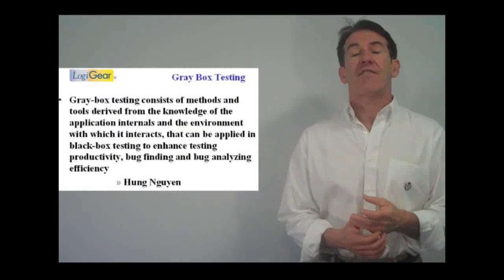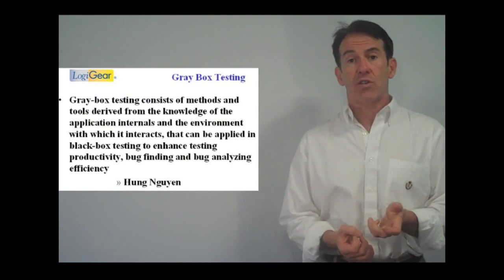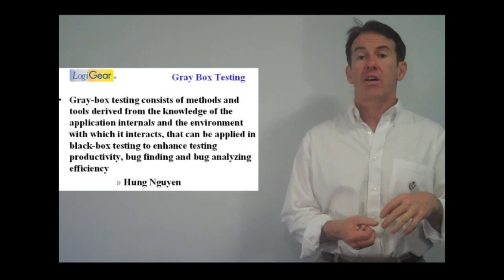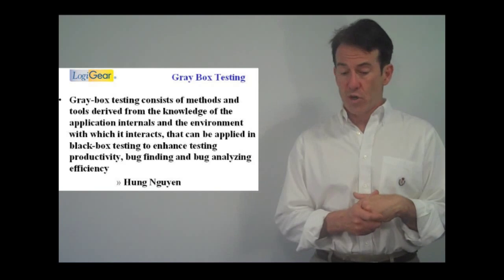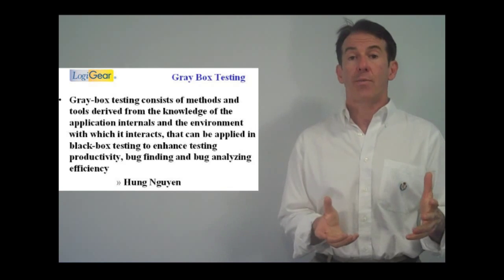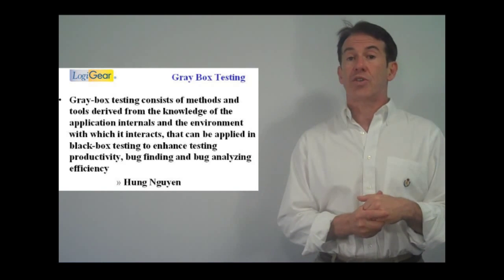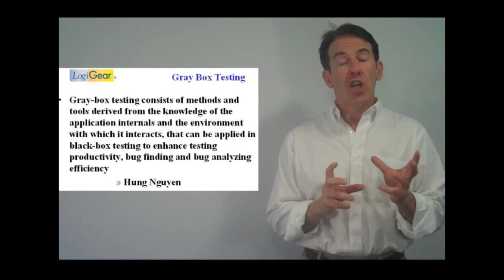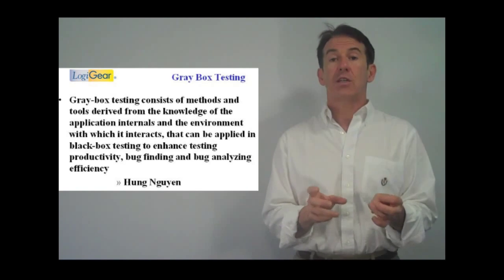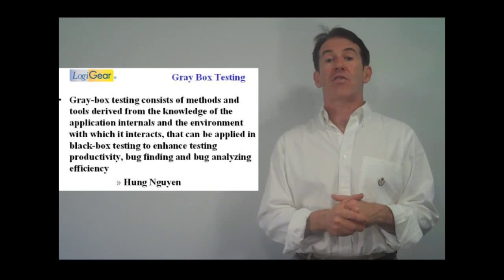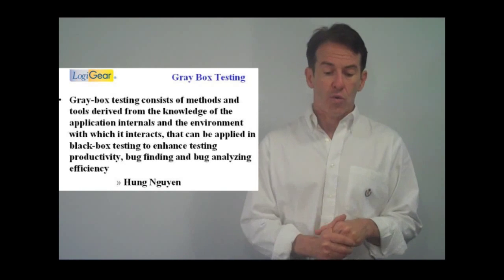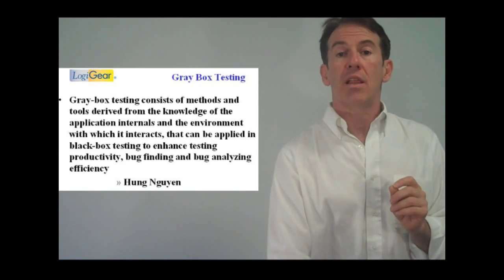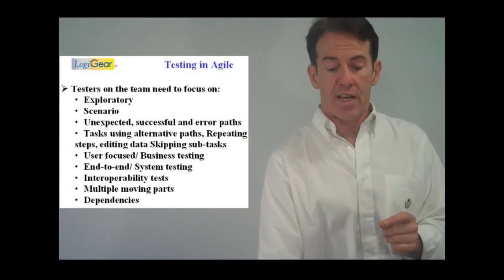We cannot say enough that automation is really essential. I've heard people talk about the only three things you have to know about testing in the Agile world is automate, automate, automate. We cannot understate just how much automation means to having a successful implementation of Agile. If you're not automating a lot, you're probably not going to be successful in Agile.